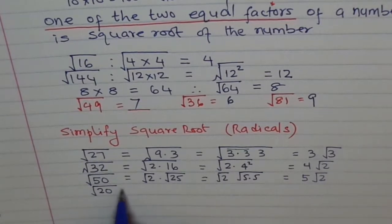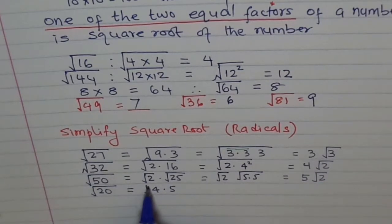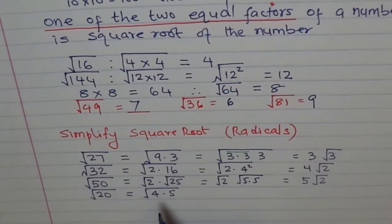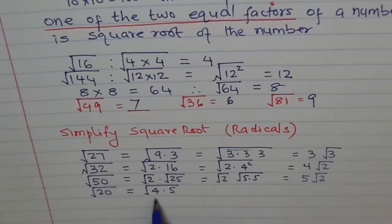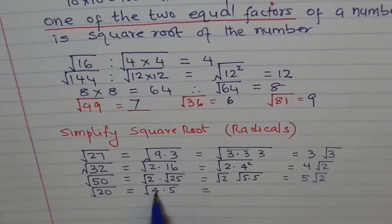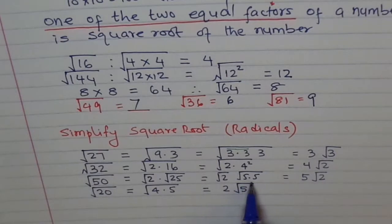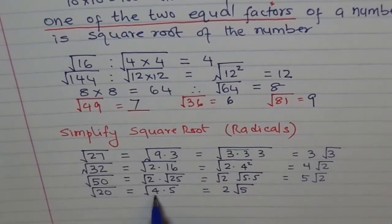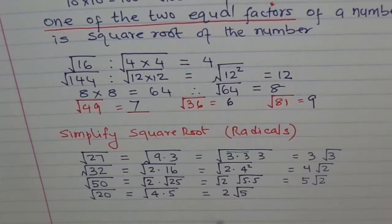Try this: square root of 20. 20 can be written as 4 times 5. Now we know 4 is a perfect square — 2 times 2 is 4. So we can straight away write 2 outside: 2 square root 5. We can avoid the intermediate step and write this directly, because square root of 4 is 2. So like this we can simplify the square root.